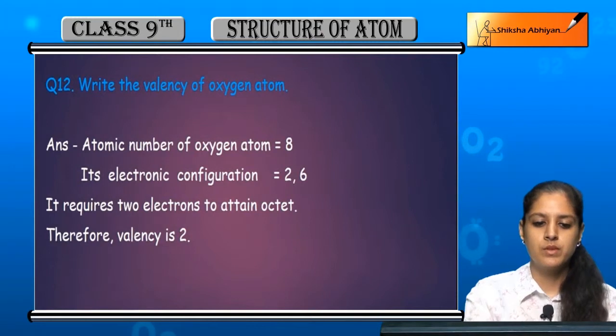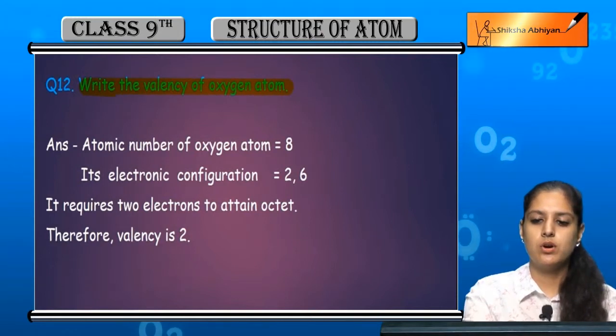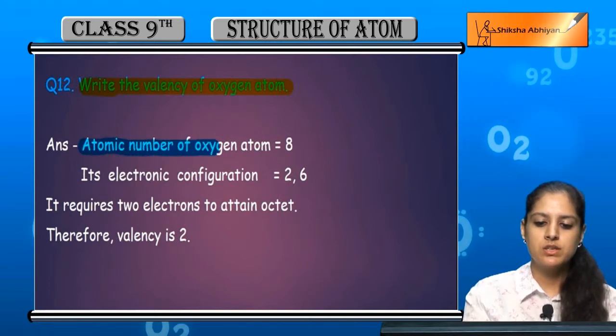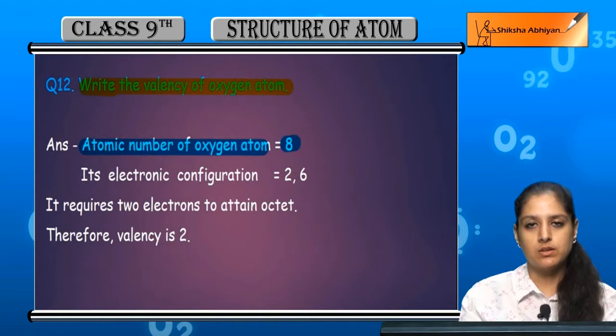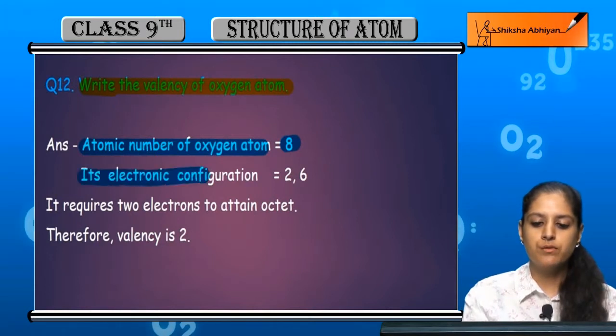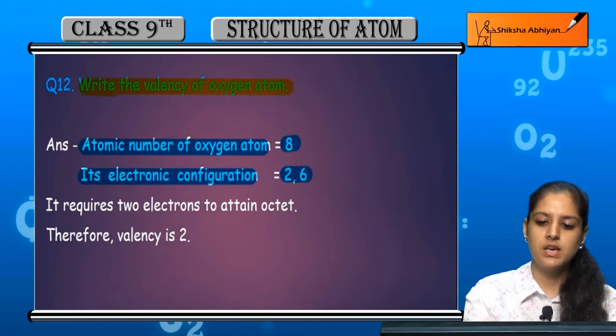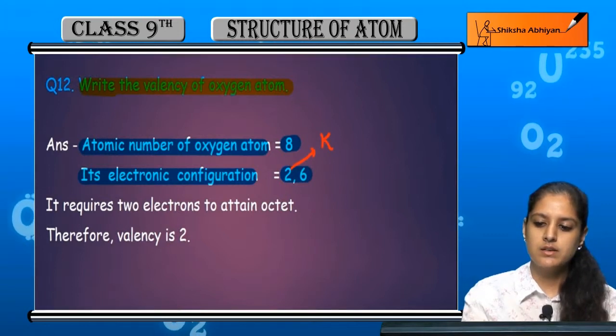Question number 12: Write the valency of oxygen atom. First, the atomic number of oxygen is 8, so its electronic configuration is 2 comma 6. 2 electrons are in the K shell and 6 are in the L shell.